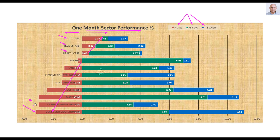Eight sectors went down. Some declined with pretty large percentages — especially consumer discretionary, communication services, materials, and industrials, all of which went down by more than 2%. More sectors went down than went up, and the declining sectors had a bigger drop percentage-wise. At the sector level, we are seeing a more bearish picture than bullish.